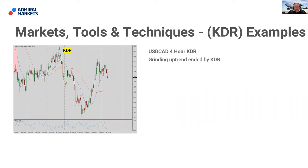Here's an example on the US dollar Canadian dollar: price has been grinding its way north, but then price pushes to a new high and the candle rolls over and closes beneath the low of the previous candle — giving an indication that the uptrend has come to an end. Price then really falls away. They don't happen often, but when they do at the end of a trend — remember, this is a reversal candle, so it needs something to reverse — that's what helps us recognize an opportunity to position ourselves for a new trend.